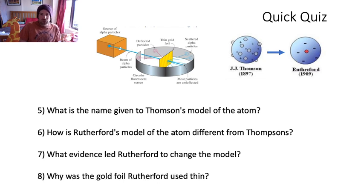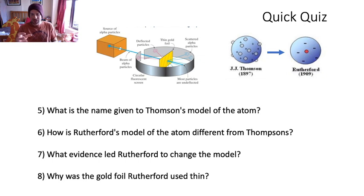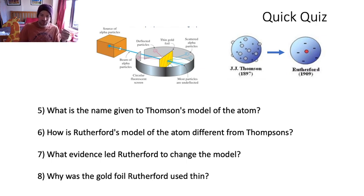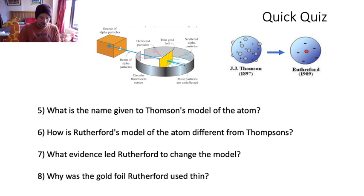And finally: why was the gold foil Rutherford used thin? This is probably a higher question - why couldn't he just have a big lump of gold? It's not to do with cost - he had loads of money, he could have had a big bit of gold if he wanted. Why did he make the gold foil really thin? Tricky one, but there we go.